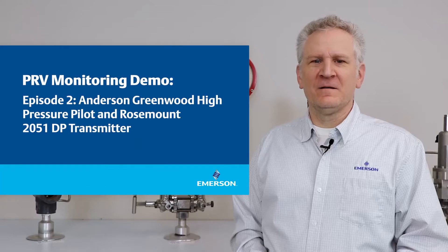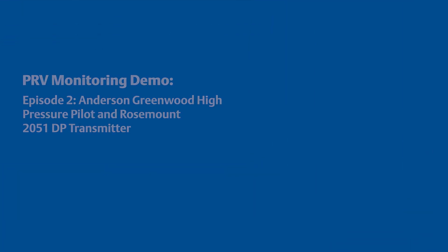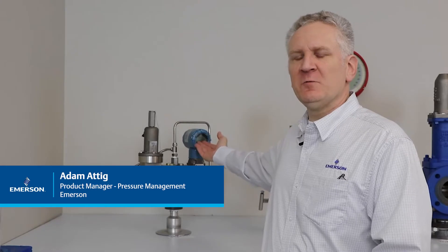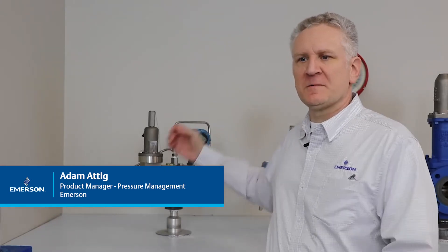The first example of a monitored PRV we will review today is the Anderson Greenwood High Pressure Pilot with the Rosemont 2051 Differential Pressure Transmitter.